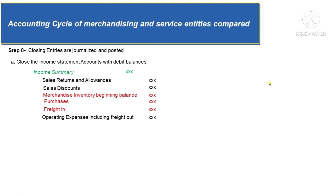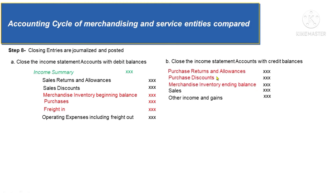Continuing, when accounts with debit balances are credited, they are reduced to zero once posted to the ledger. The second closing entry is the opposite — closing income statement accounts with credit balances by debiting them. The accounts with credit balances to be debited are purchase returns and allowances, purchase discounts, merchandise inventory ending balance, sales, and other income and gains. After debiting them, credit the income summary account for the total.